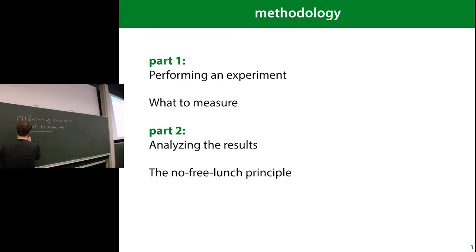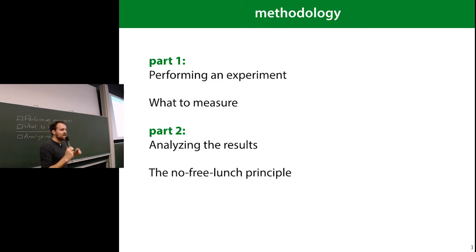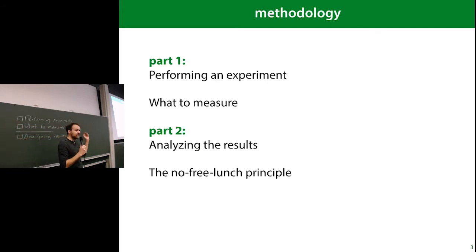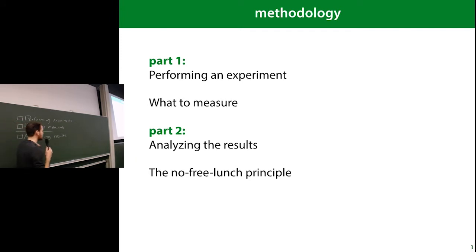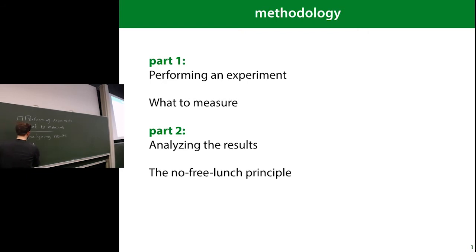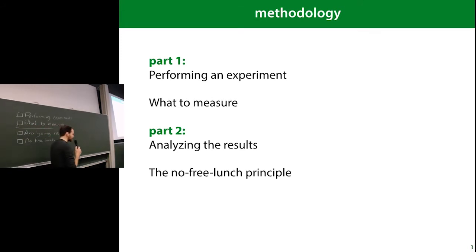Then we get into the slightly hairier subject of analyzing the results. If you have classifier A and you get accuracy this, and classifier B and you get accuracy that, you can say this number is higher so classifier B is better. But we haven't really talked about statistics yet — whether that observed effect is due to a fundamental property of the classifiers, or just due to chance, which is always a possibility. We're going to talk about that. And finally, briefly, I'd like to discuss the no free lunch principle, a guiding principle in machine learning.